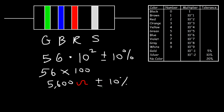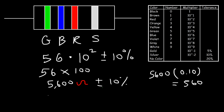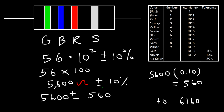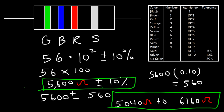Now let's calculate ten percent of fifty-six hundred. So fifty-six hundred times 0.10 — to convert a percentage to a decimal, divide by a hundred or move the decimal point two units to the left. Fifty-six hundred times 0.10 is five hundred sixty. So we'll need to add or subtract by five sixty. Fifty-six hundred plus five sixty is six thousand one hundred sixty, and fifty-six hundred minus five sixty is five thousand and forty. So the actual resistance can be anywhere between five thousand forty ohms and sixty-one sixty ohms, with the average value being around fifty-six hundred.